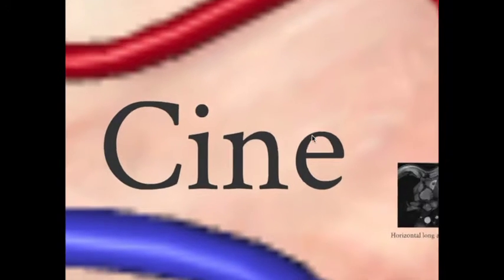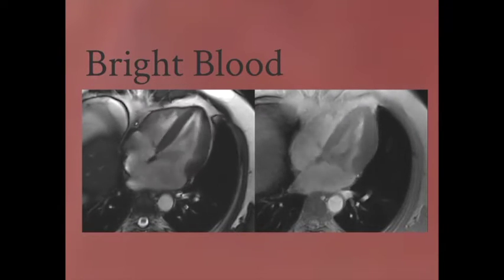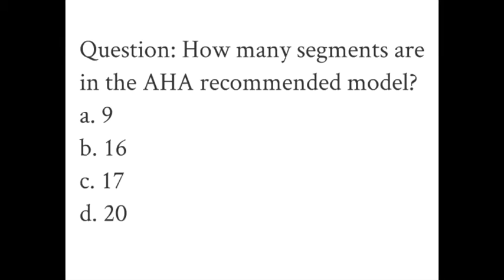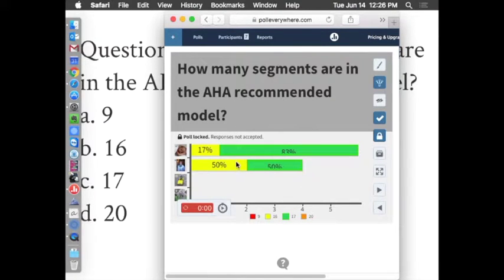Next we'll talk about pulse sequences, starting with CINE, which is the hallmark of cardiac MRI — what separates it from other modalities — our ability to quantitate blood flow. We do that mainly with this bright blood sequence. CINE means we're playing a movie, seeing it throughout the entire cardiac cycle. How many segments are in the AHA-recommended model? 17 — the 17th segment is the true LV apex. Initially it was 16; in echo they often don't see the true LV apex, which is why it wasn't initially included, but with MR we definitely see it.